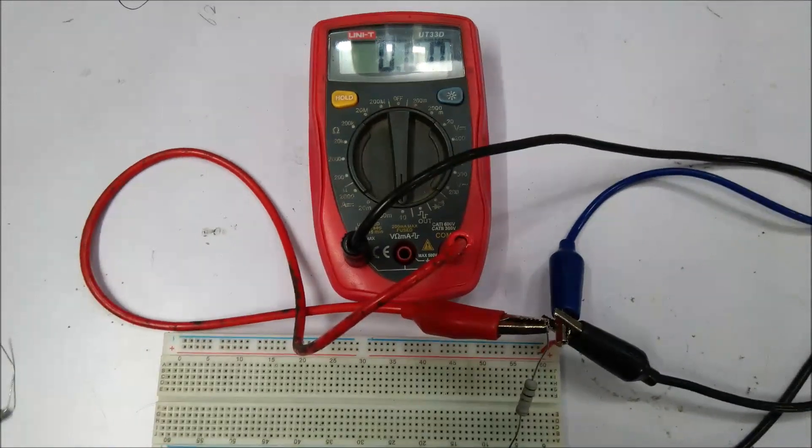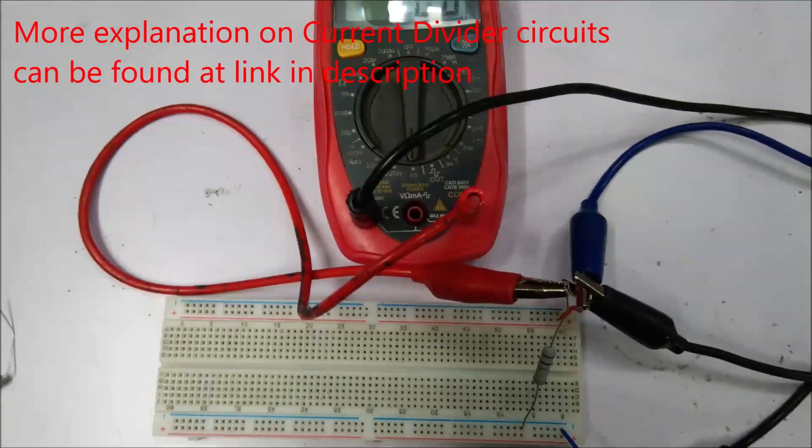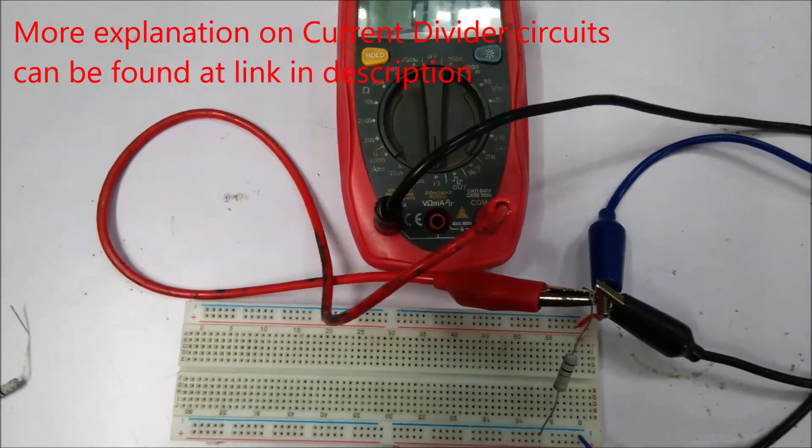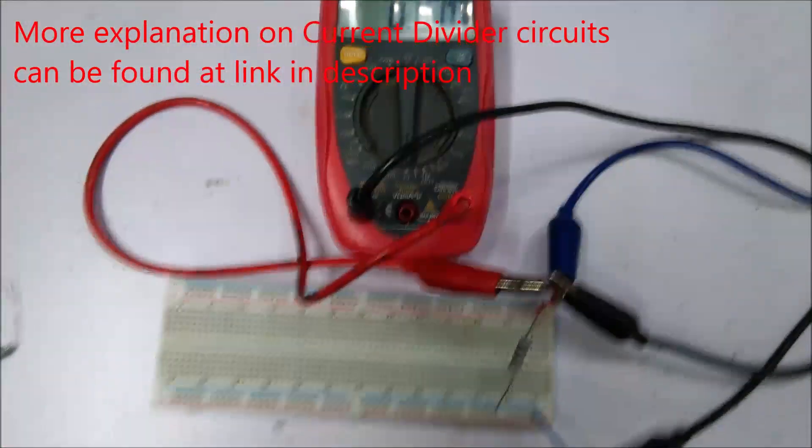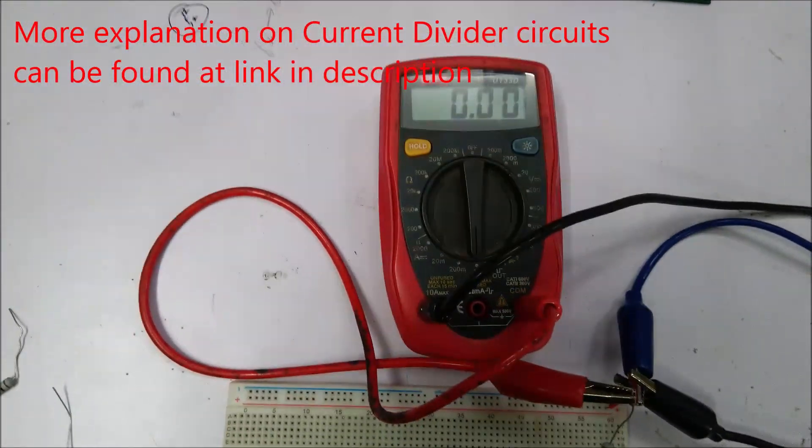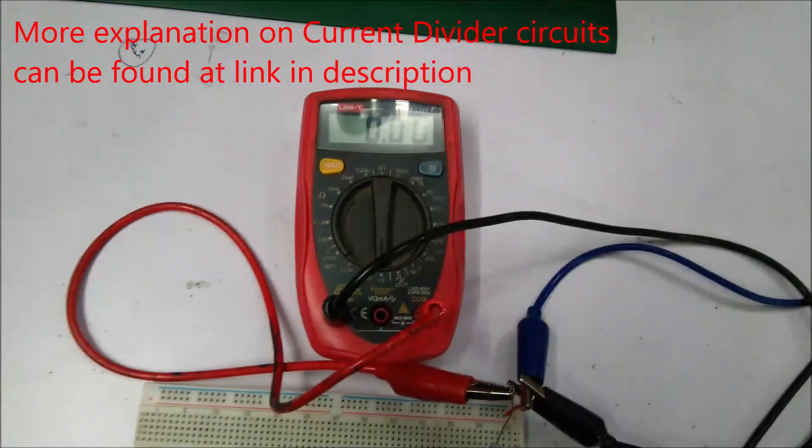Hello everyone, this is Sorog and here I am demonstrating the current divider using a resistance. So here is a 1 ohm resistor that is connected across an amp meter. The multimeter is configured as an amp meter.